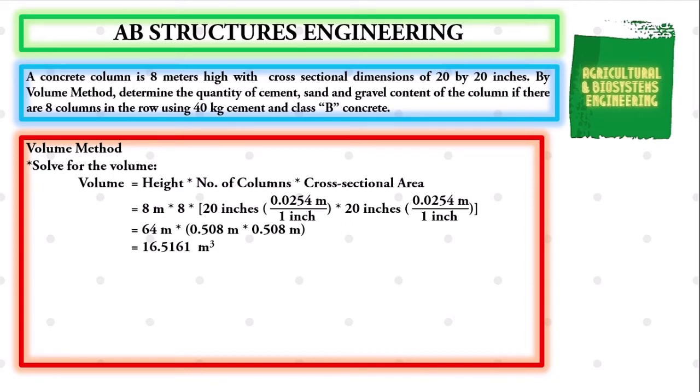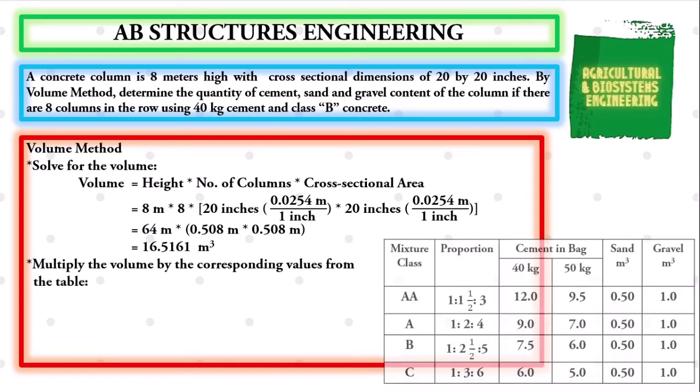The next step is to multiply the volume to the corresponding values from the table. The table shown in your screen right now is where we can get the cement, sand and gravel value necessary to get the quantity of our materials. This table is always used when the method being used is the volume method.